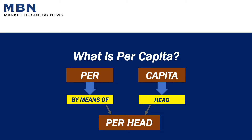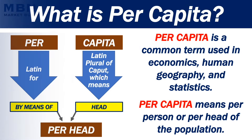What is per capita? Per capita is a common term used in economics, human geography and statistics. Per capita means per person or per head of the population.